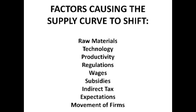Now we're going to cover all the factors that cause the supply curve to actually shift. If there is an increase in total supply, the supply curve will shift to the right, and if there is a decrease, it will shift to the left. The factors that affect the shifting of the supply curve are: raw materials, technology, productivity, regulations, wages, subsidies, indirect taxes, expectations, and the movement of firms.